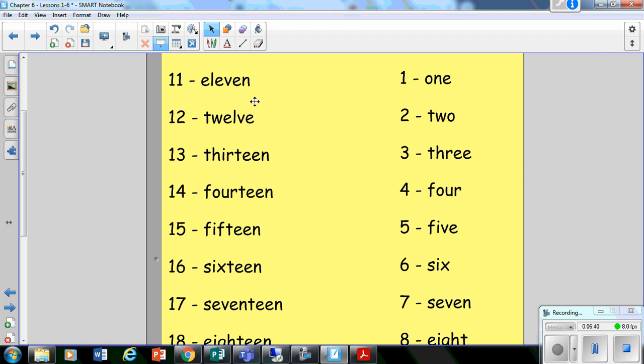They also have different names. Not all of them have teen at the end. Okay, so you could just see for 3, we've got 13. Okay, we don't say threeteen. We've got 4. We say 14. We've got 4 and the suffix teen.